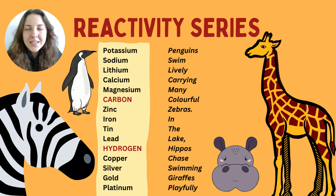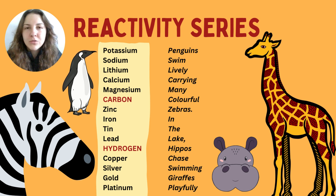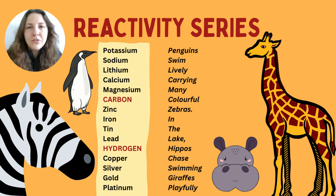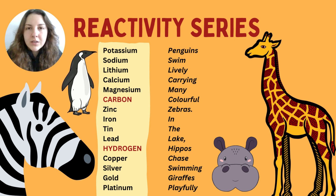Today's topic is the reactivity series. What actually is the reactivity series? You can see it here — it's essentially a list of metals in order of reactivity. Scientists use it to determine how metals will react when reacting with other metals, metal compounds, or in different solutions such as water, acids, or with oxygen.